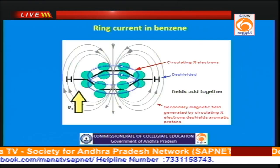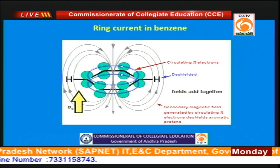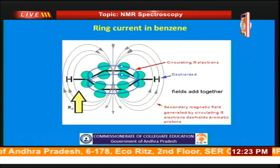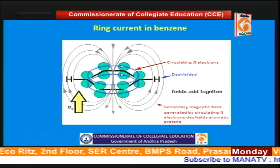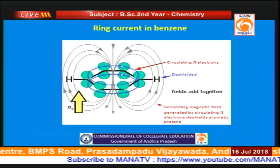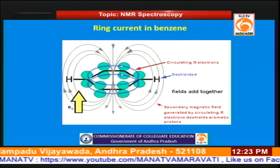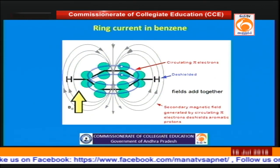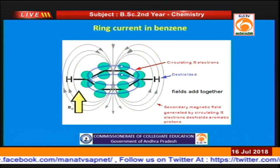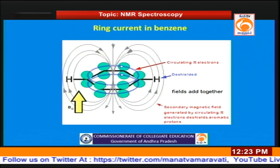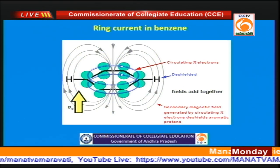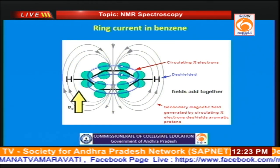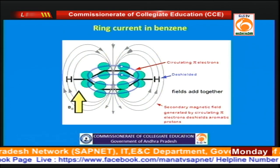Consider the ring current effect in benzene. In benzene there is a 6-π system, and because of this there is a ring current effect and circulation of π electrons, which generates a magnetic field. This magnetic field is paramagnetic in the plane of the molecule, whereas above and below the plane of the molecule it is diamagnetic. Therefore, protons present above and below the benzene ring are shielded, whereas protons present within the plane are deshielded. All benzene protons are present in the plane, so they are more deshielded.